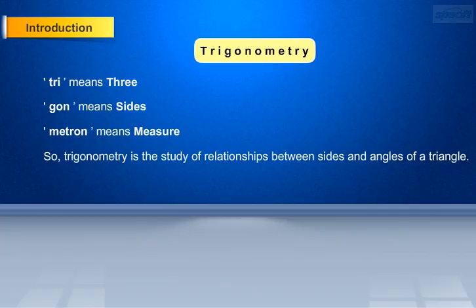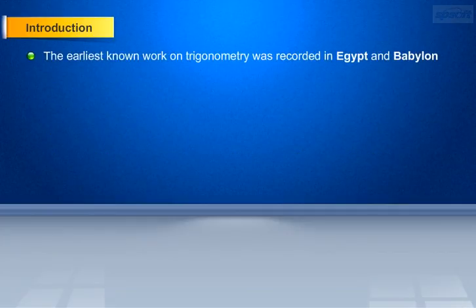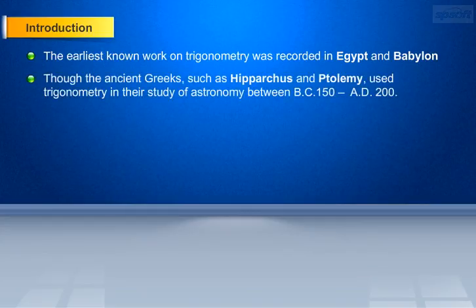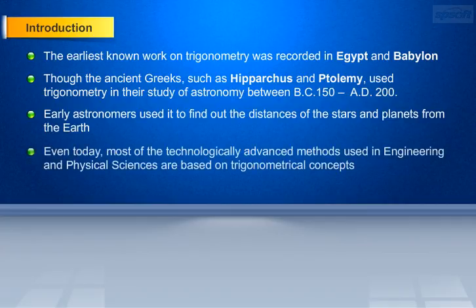Let us now know the history of trigonometry. The earliest known work on trigonometry was recorded in Egypt and Babylon. Though the ancient Greeks, such as Hipparchus and Ptolemy, used trigonometry in their study of astronomy, roughly between 150 BC to AD 200. Early astronomers used it to find out the distances of the stars and planets from the earth. Even today, most of the technologically advanced methods used in engineering and physical sciences are based on trigonometrical concepts.